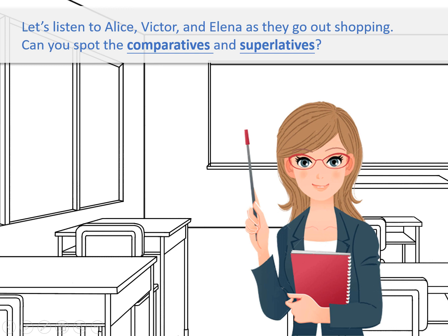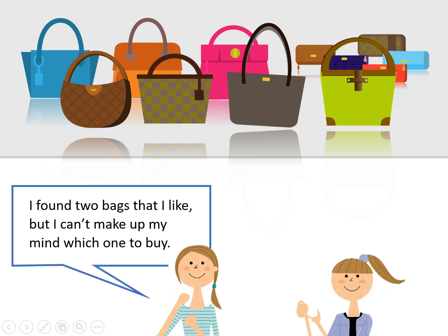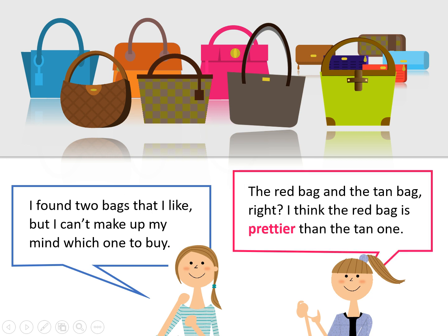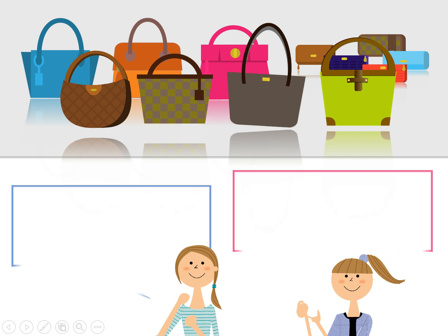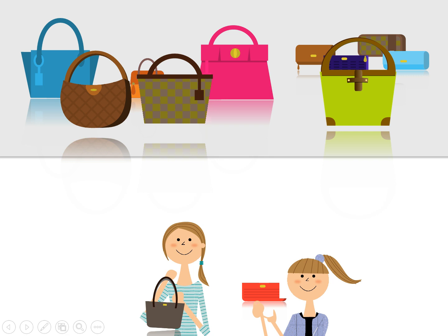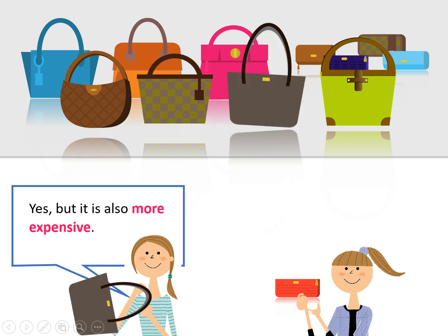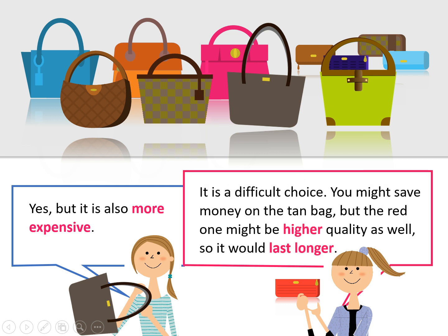Let's listen to Alice, Victor, and Elena as they go out shopping. Can you spot the comparatives and superlatives? Alice says: I found two bags that I like, but I can't make up my mind which one to buy. Victor: The red bag and the tan bag, right? I think the red bag is prettier than the tan one. Elena: Yes, but it is also more expensive. It is a difficult choice. You might save money on the tan bag, but the red one might be higher quality as well, so it would last longer.